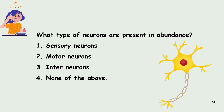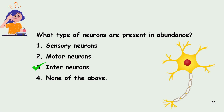The next question is: what type of neurons are present in abundance? 1) Sensory neurons, 2) Motor neurons, 3) Interneurons, or 4) None of the above. The answer is 3 — interneurons are the type of neurons that are present in abundance.